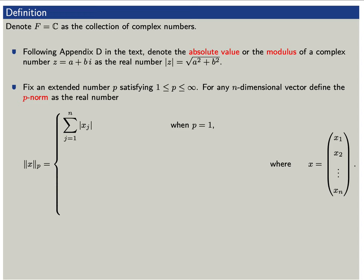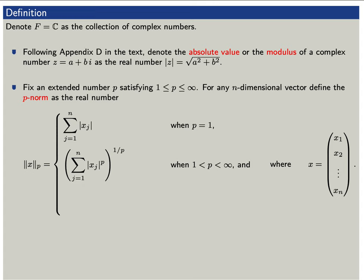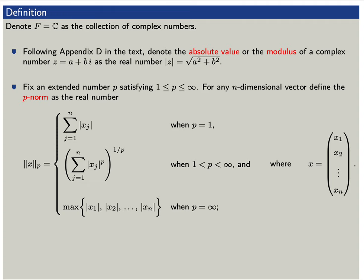When p equals 1, the p-norm is the sum of the absolute values of the components x sub j. When p is between 1 and infinity, we define the p-norm as the p-th root of the sum of the p-th powers of the absolute values of the components: the p-th root of the sum from j equals 1 to n of the absolute value of x sub j raised to the p. When p equals infinity, the p-norm is the maximum of the absolute values of the components.